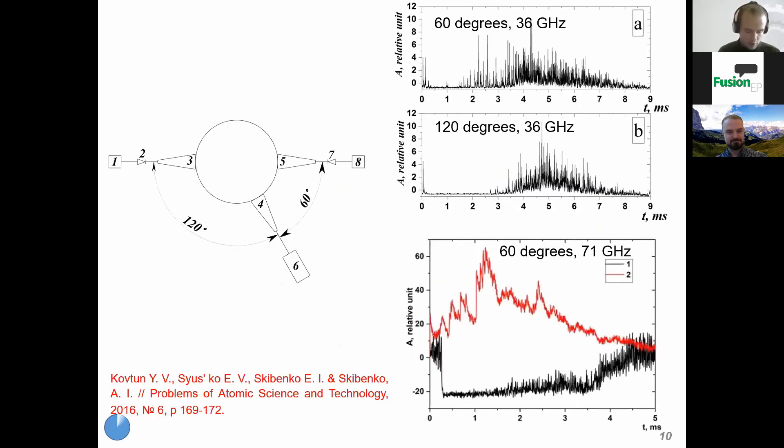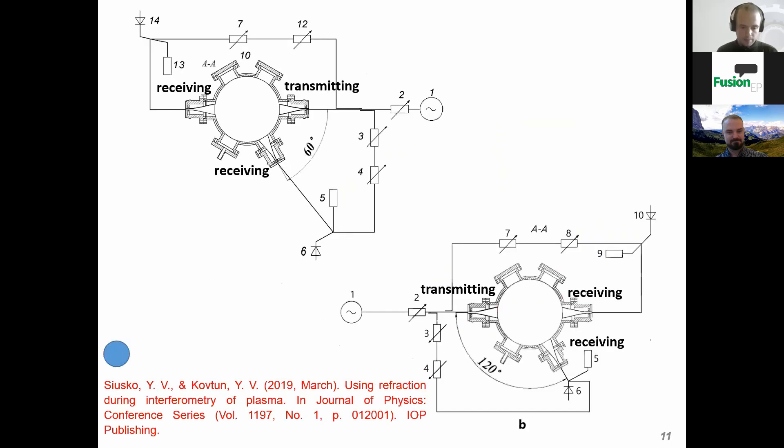Here you can see the measurement scheme. The experiments also show the scattered signal at angles 60 and 120 degrees. The scattered signal at 71 GHz has a maximum when in plasma near critical. At the same condition, the signal at 36 GHz has a minimum. The interferometer using refraction was installed at 60 and 120 degrees relative to the transmitting horn antenna axis.